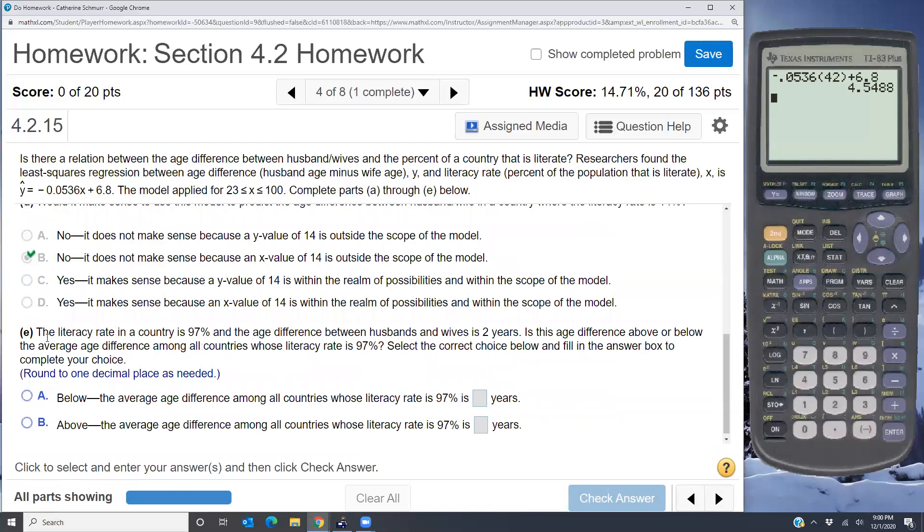And then they say the literacy rate in a country is 97%. The age difference between husbands and wives is 2 years. Is this age difference above or below the average age difference among all countries whose literacy rate is 97%? Now the average when they talk about that, that comes from your prediction model.